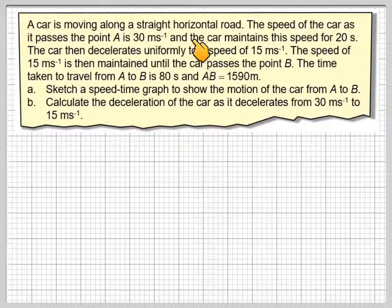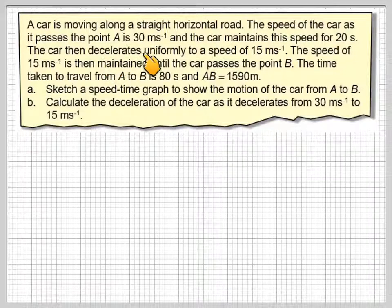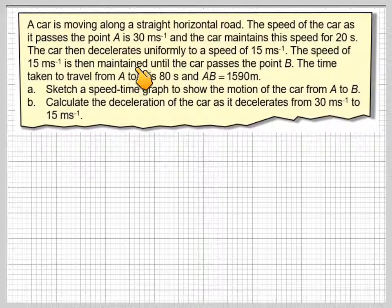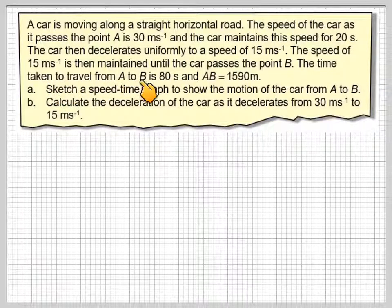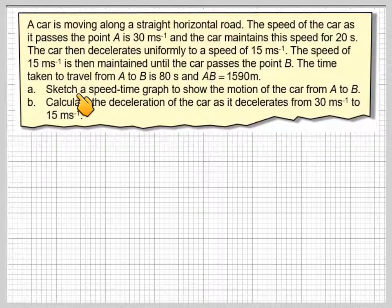A car is moving along a straight horizontal road. The speed of the car as it passes point A is 30 metres per second. The car maintains the speed for 20 seconds. The car then decelerates uniformly to a speed of 15 metres per second. The speed of 15 metres per second is then maintained until the car passes point B.